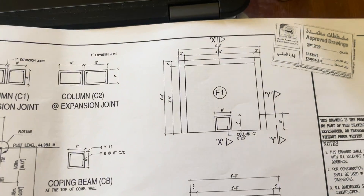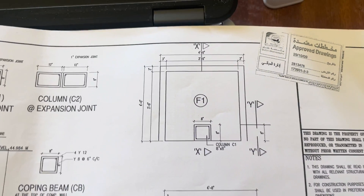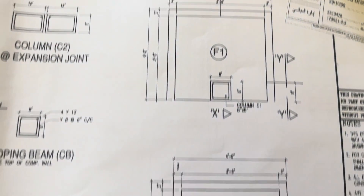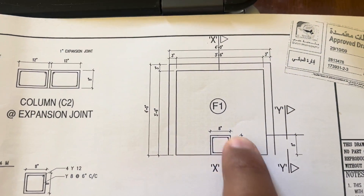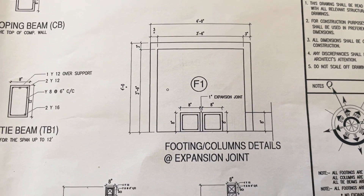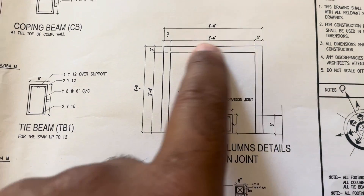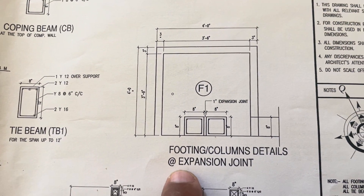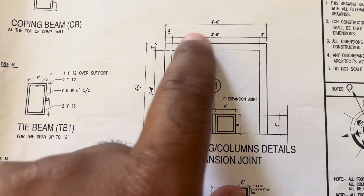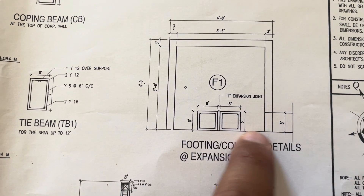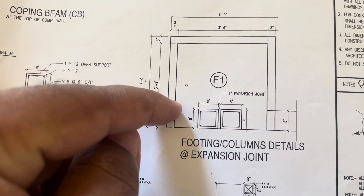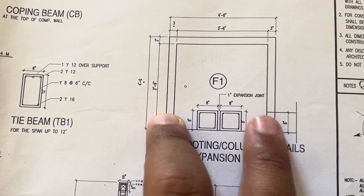This is the F4 footing detail, which is 4 by 4 feet and eccentric. This footing detail is used for expansion joints. Where the expansion joint occurs, you will use this column detail — the footing is 4 by 4 feet, and from the center you take 8 inches from the edge. So two columns will come together at the expansion joint location in the layout.